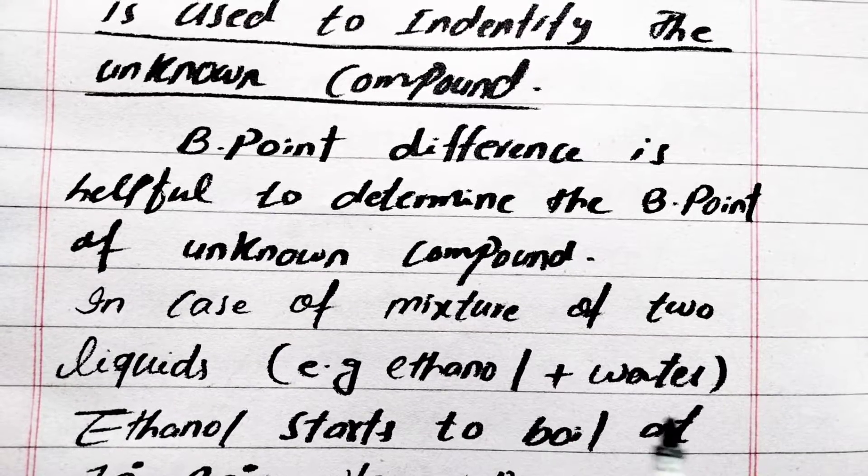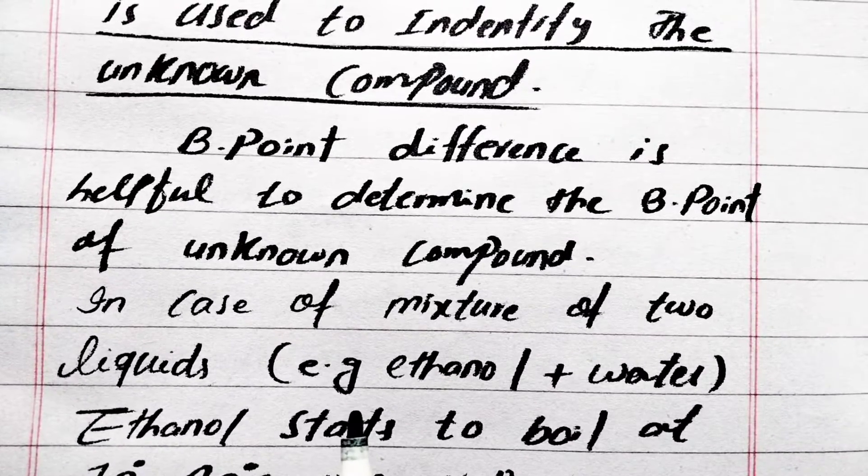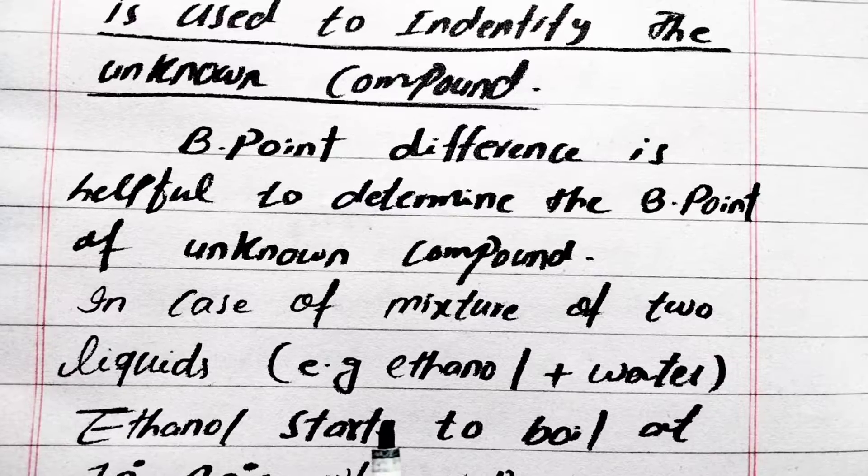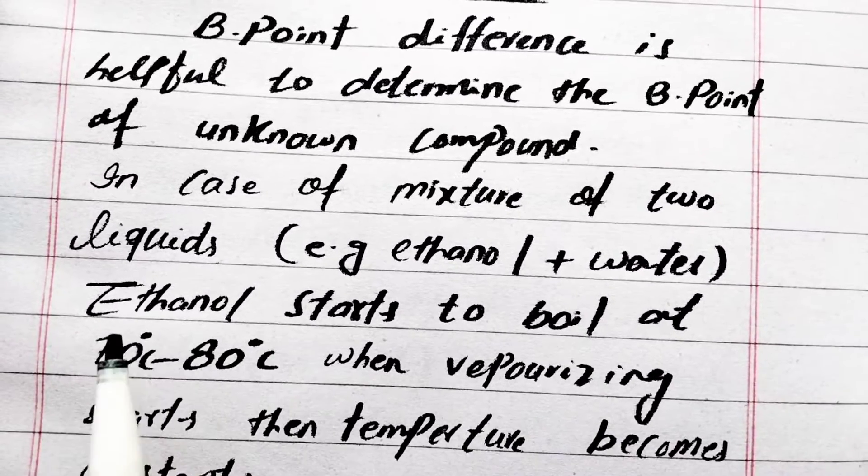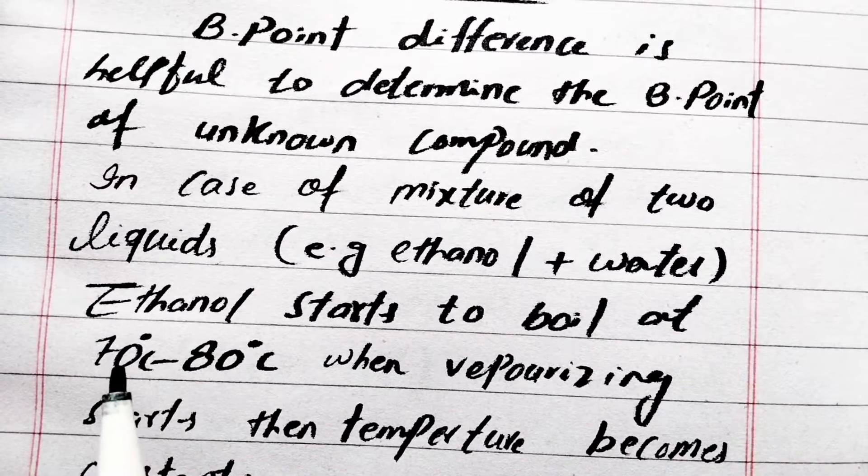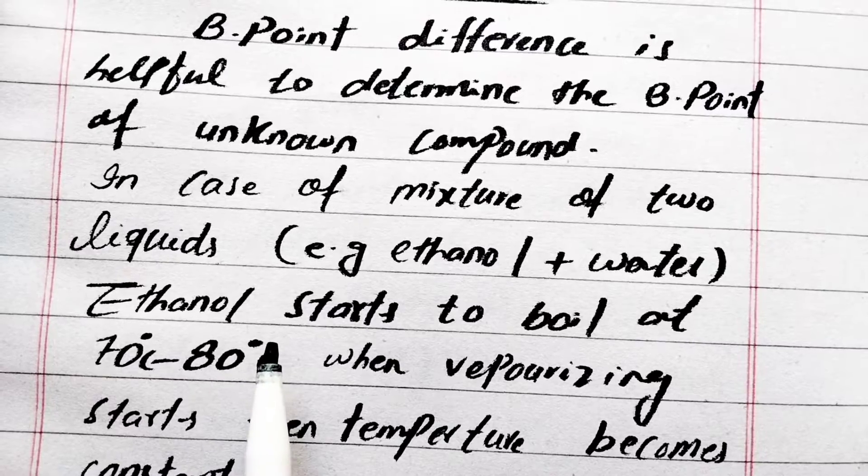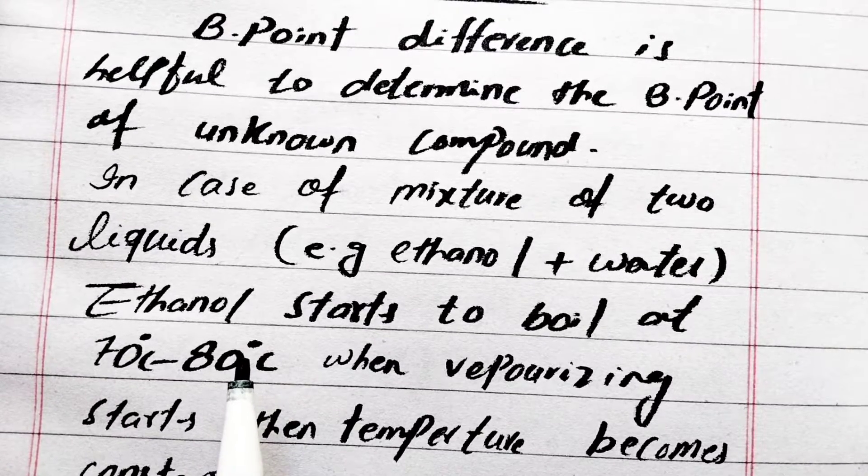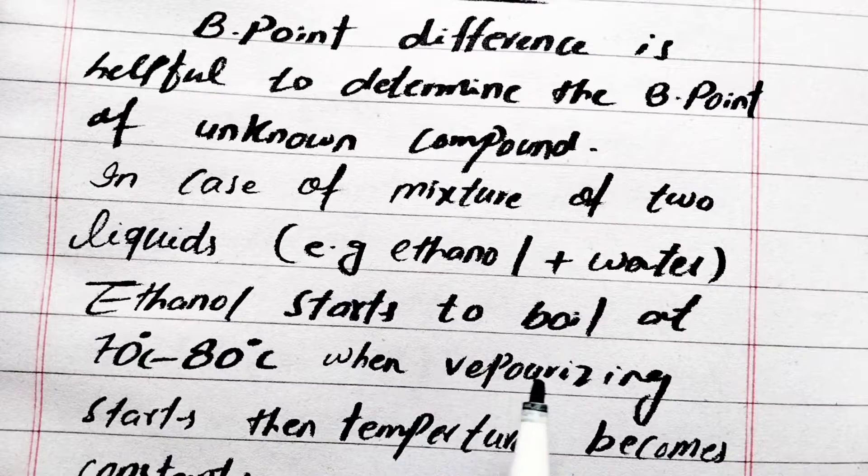Ethanol has less boiling point than water. It evaporates when the temperature is near 70 to 80 degrees Celsius, but the boiling point of water is 100 degrees Celsius. So when vaporizing starts, the temperature becomes constant.